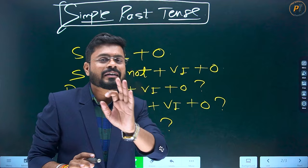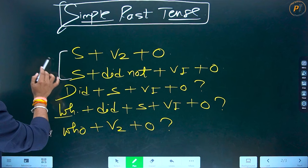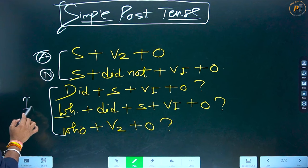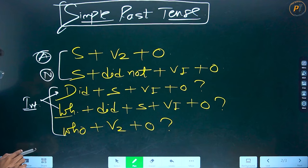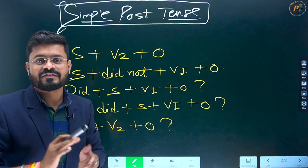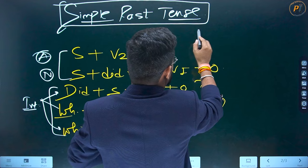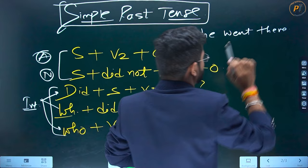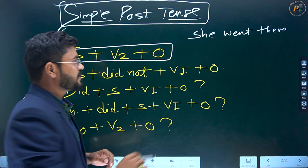Koi bhi tense ka aap study kar rahe ho, usko aap is tariqe se pahle — do banana sikho. Yeh jo dono sentence hain: yeh affirmative ho, yeh negative ho, yeh interrogative ho, yeh WH-word wala interrogative ho. Toh sabse pahle cheez jo aap sabhi ko aani chahiye, ki aap ek sentence se alag-alag varieties ke sentence create kar lo. Just dekhiye — ek sentence aapne banaya, maan lijiye: she went there. Yeh ek bohot simple sa sentence hai. Iska negative kya hoga?